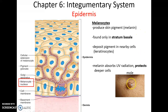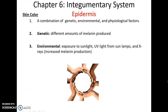Skin color is determined by a combination of genetic elements, the environment, and some physiological factors. Genetically, some people have melanocytes that produce more melanin than other people, giving that person a darker skin color and therefore greater protection against UV light. Environmental factors are basically how much exposure you get to sunlight or the equivalent in the form of UV light from sun lamps and X-rays. This causes an increased production of melanin — some people call this tanning.